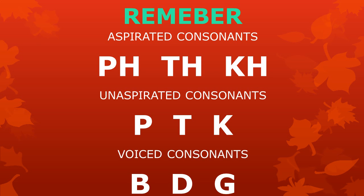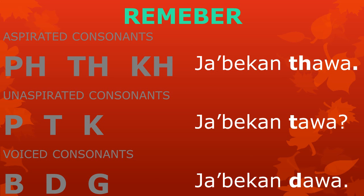So remember: the aspirated consonants ph, th, and kh are written with the letter ha. They are different from the unaspirated consonants p, t, k, and the voiced consonants b, d, g. For example, ja'bekhan tawa has a very different meaning than ja'bekan tawa or ja'bekan dawa.